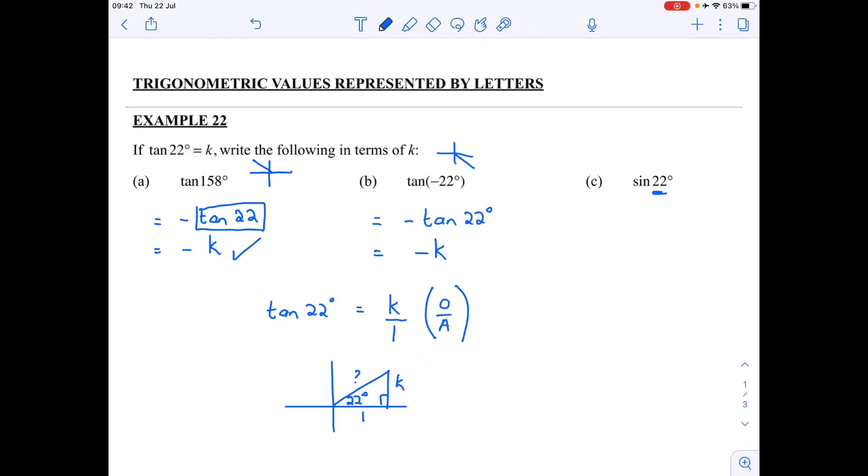So now if I want to go and work out my hypotenuse, what am I going to do? Absolutely, I'm going to work with Pythagoras. And that means that h, my hypotenuse, is going to be the square root of k squared plus 1 squared, which is 1. I cannot take the square root of that because it's two terms. It's not one term.